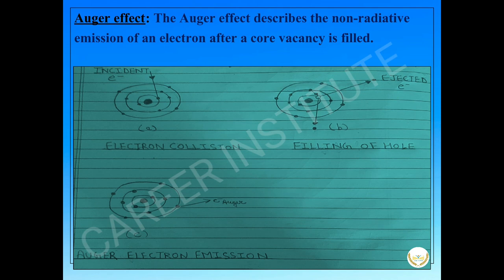Auger effect: The Auger effect describes the non-radiative emission of an electron after a core vacancy is filled. Figure A shows that when the electron beam electron collides with the core electron, this collision causes the ejection of the core electron and the formation of a hole which is shown in Figure B.